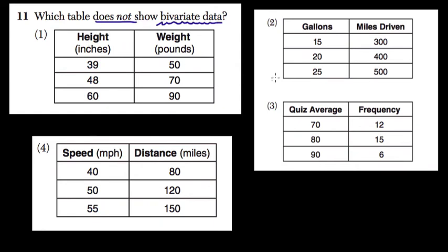Okay. So here there are one, two, three, four tables. And we're looking for the one that is not a bivariate data table. In the first table, is this bivariate? Well, yes.